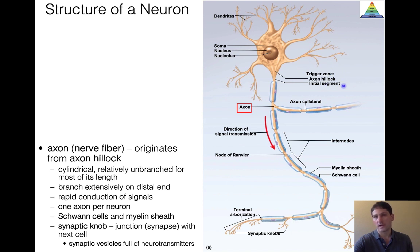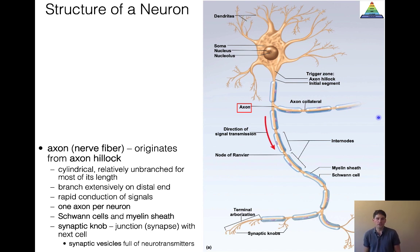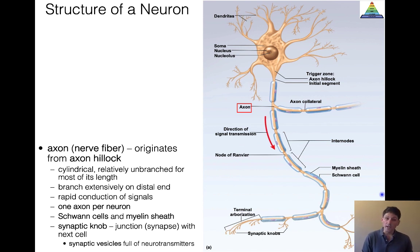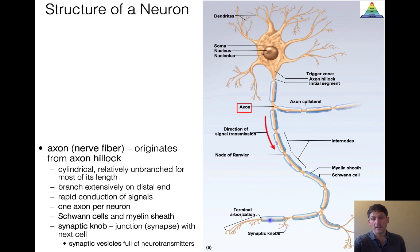The axon is mostly unbranched for most of its length but has lots of branches on the distal end so it can communicate with other neurons or dendrites. We see one axon per neuron. We also see a myelin sheath made up of Schwann cells or oligodendrocytes — we'll talk more about the difference between the two. At the end of the axon, we have what's called the synaptic knobs, where neurotransmitters are going to be released to communicate with the dendrite of another neuron.